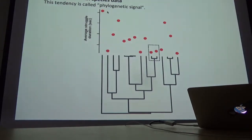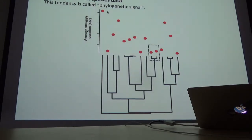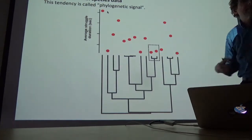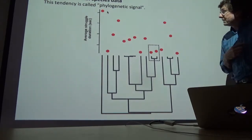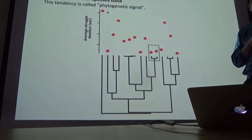There's another example of closely related species being similar in their trait values. This tendency for closely related species to be similar in their trait values is what's often referred to in the literature as phylogenetic signal.